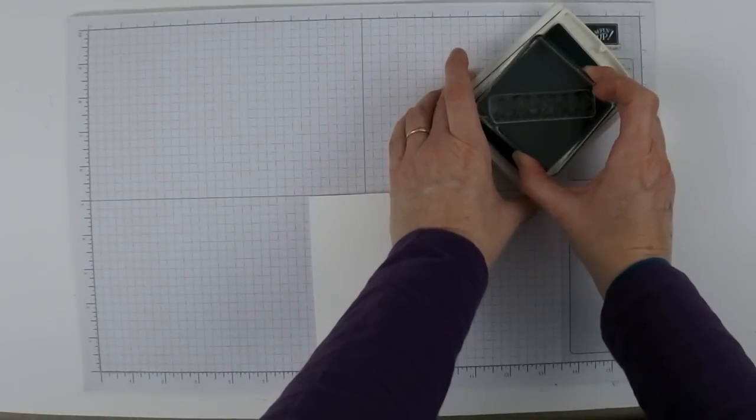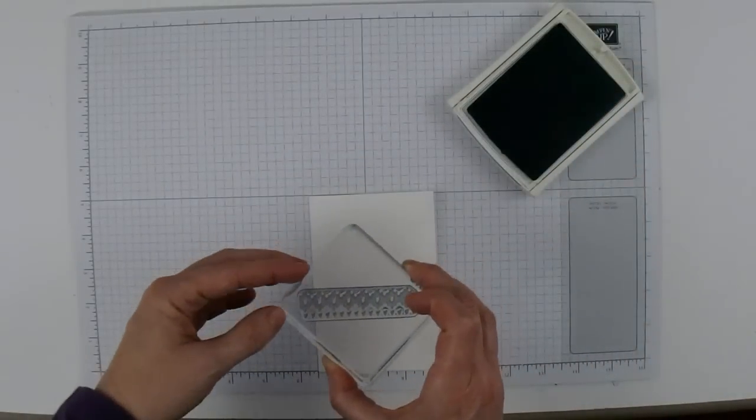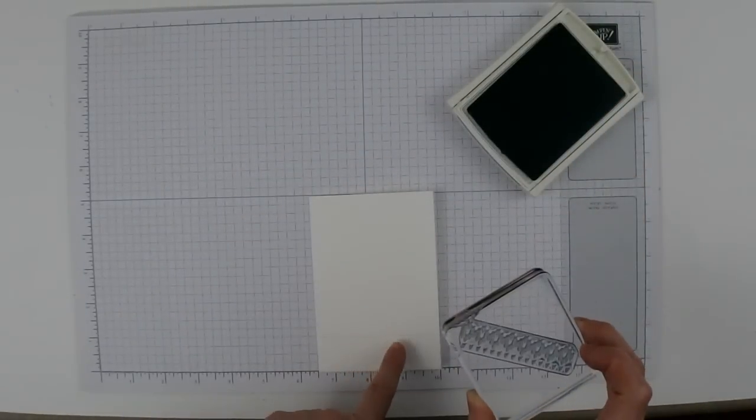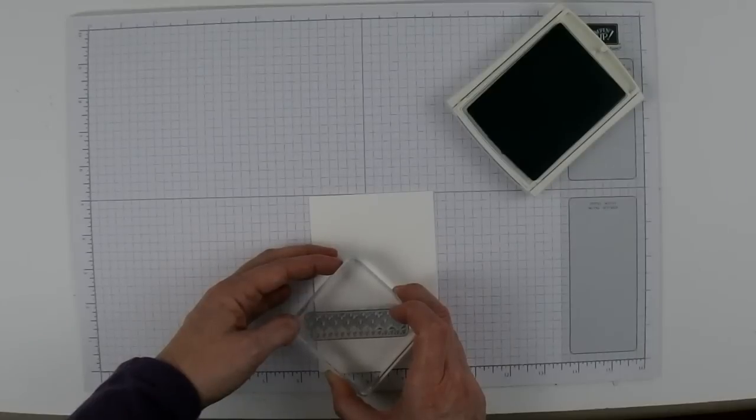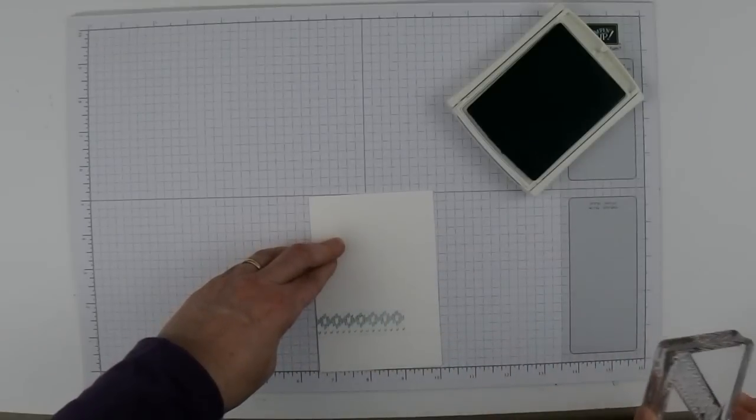This stamp is pretty square on the photopolymer, so I'm just going to use the edge to line up on the ruler here. We're going to have to stamp this twice for each line. I'm going to have it come off the edge just a little bit like that.